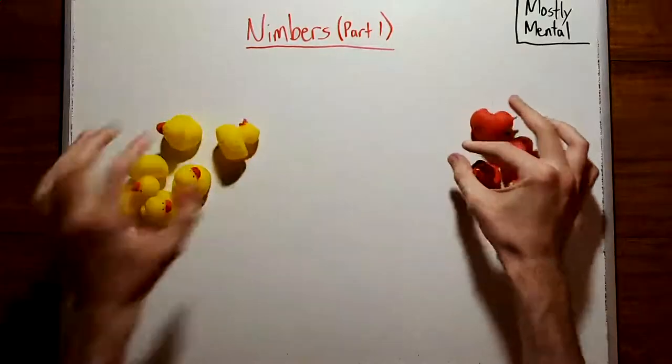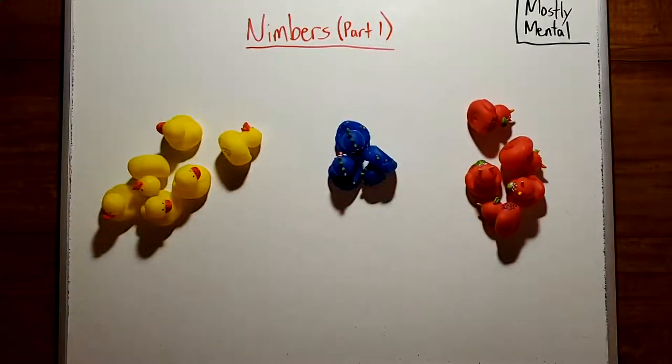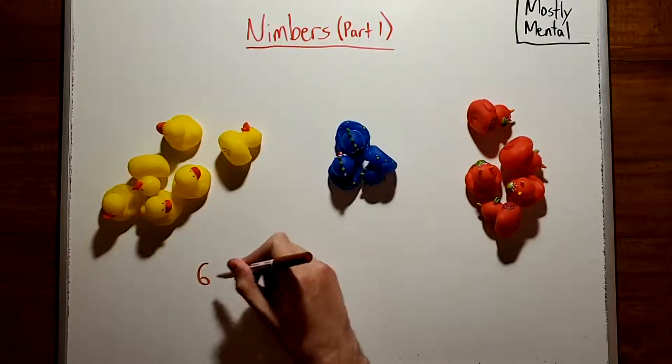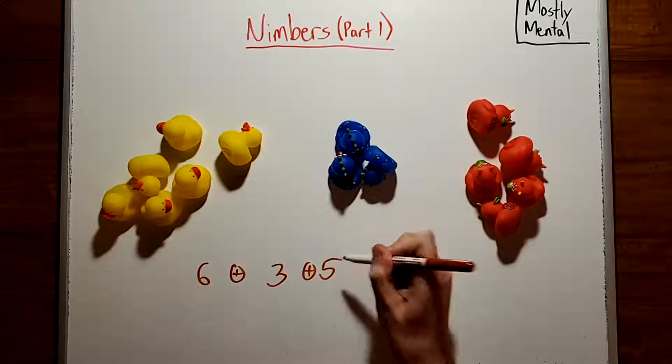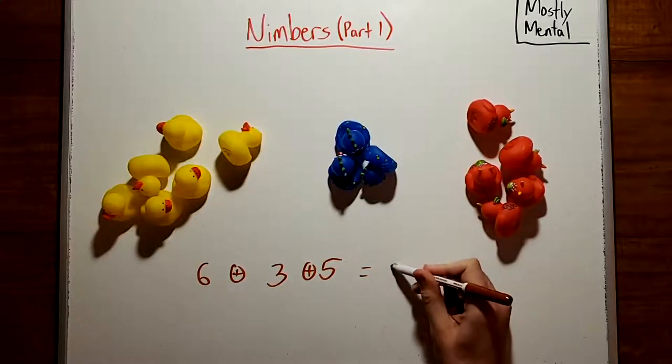Okay, what if we had three piles? As we saw last time, we can win by making the Nim sum zero. So moving to a position like this one, where six plus three plus five with our Nim addition gives zero.